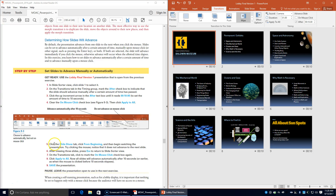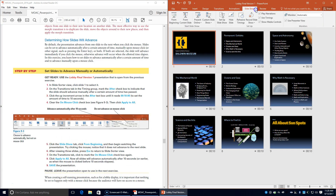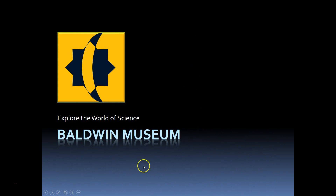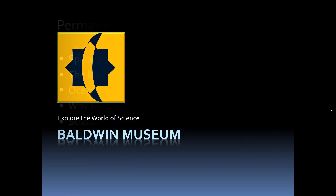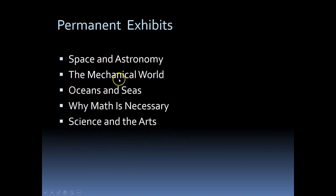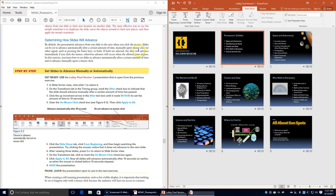Click the Slideshow tab and click From Beginning, then begin to watch the presentation. Try clicking the mouse and notice that it does not advance to the next slide — you have to wait 10 seconds for it to go to the next slide. If you don't want to wait to watch the whole presentation, just press Escape.